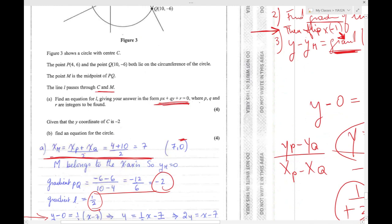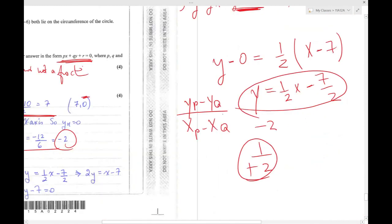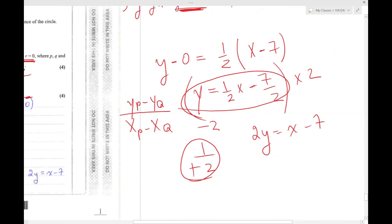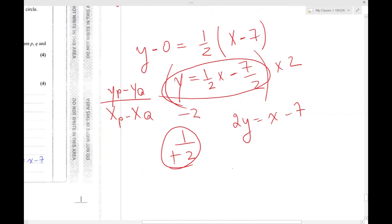We want the equation this way where P, Q, and R are integers. What do we mean by integers? Not a decimal and not a fraction. This is why you need to multiply all of this by 2. When you multiply by 2, you get rid of the denominator. You're going to get 2Y equals X minus 7. I move everything to one side and take it this way: X minus 2Y minus 7 equals 0.